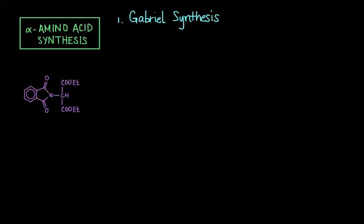In Gabriel synthesis, we begin with a molecule of what's called phthalimidomalonic ester. N-phthalimidomalonic ester is what this molecule is called, and that's kind of a mouthful, so I'm just going to call this thad. So here's our molecule of what I'm going to call thad, and this is sort of the foundation upon which we're going to build our alpha amino acid.